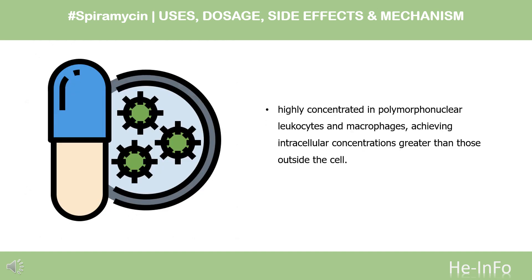Pharmacodynamics. The absolute bioavailability of oral spiromycin is generally within the range of 30–40%. After a 1g oral dose, the maximum serum drug concentration was found to be within the range of 0.4 to 1.4 mg per liter.